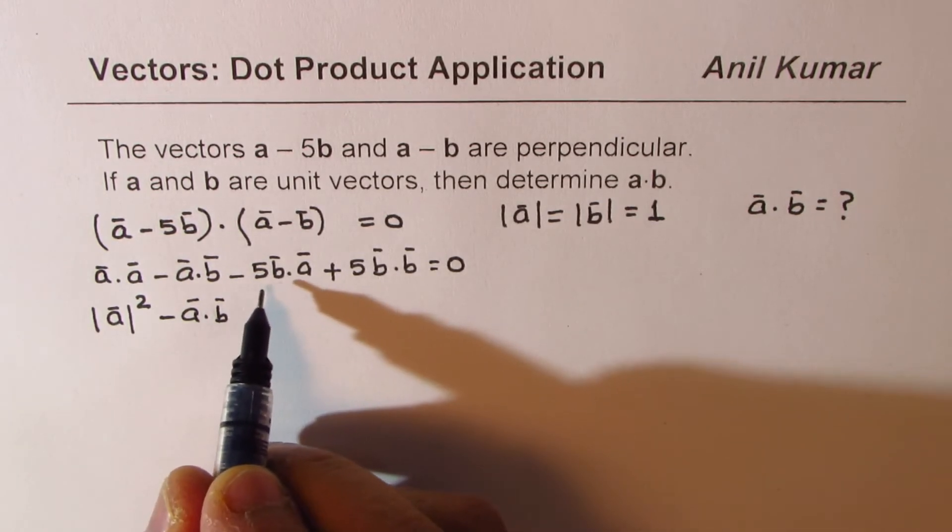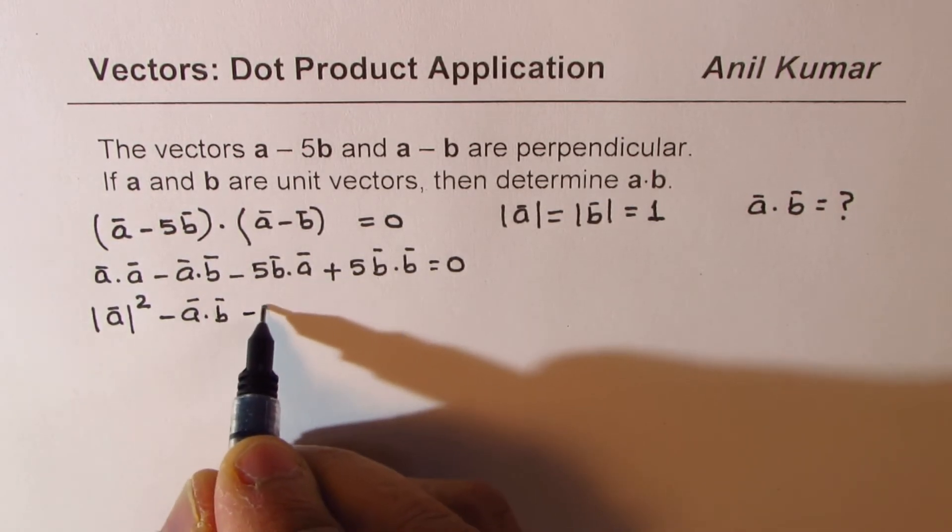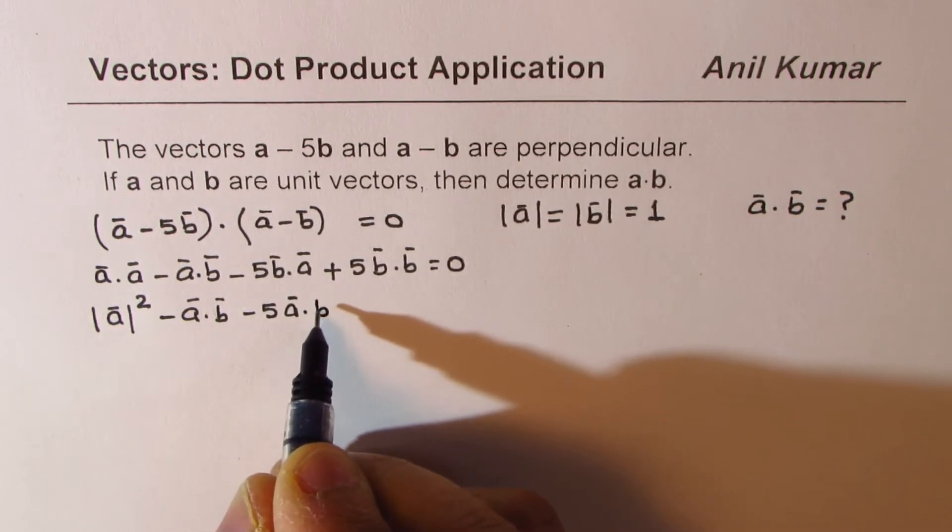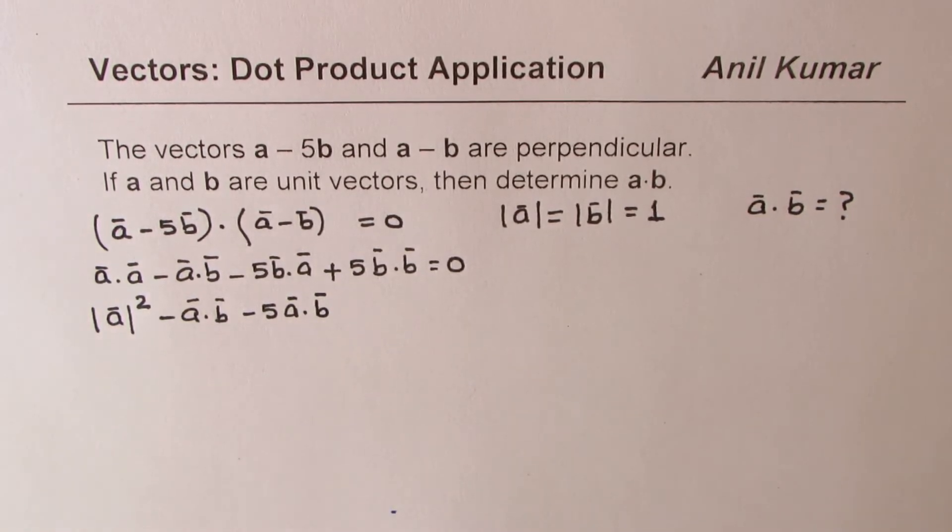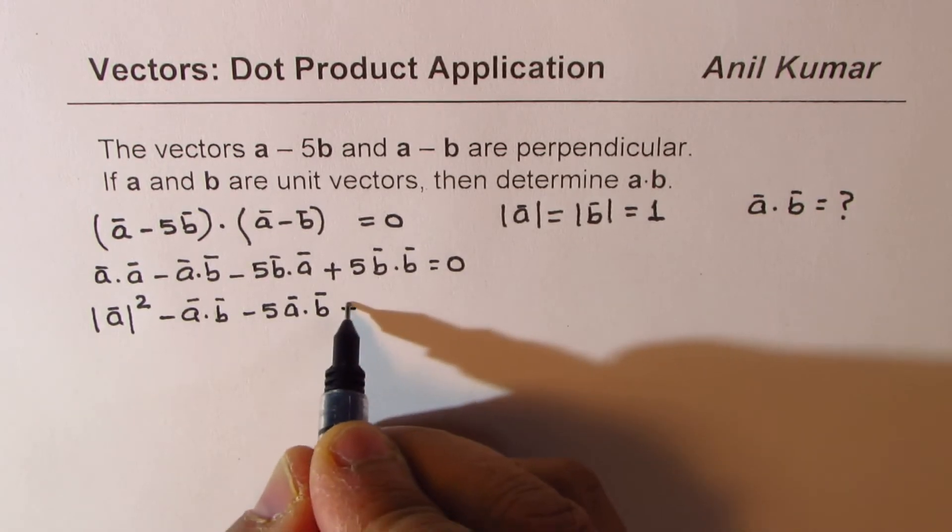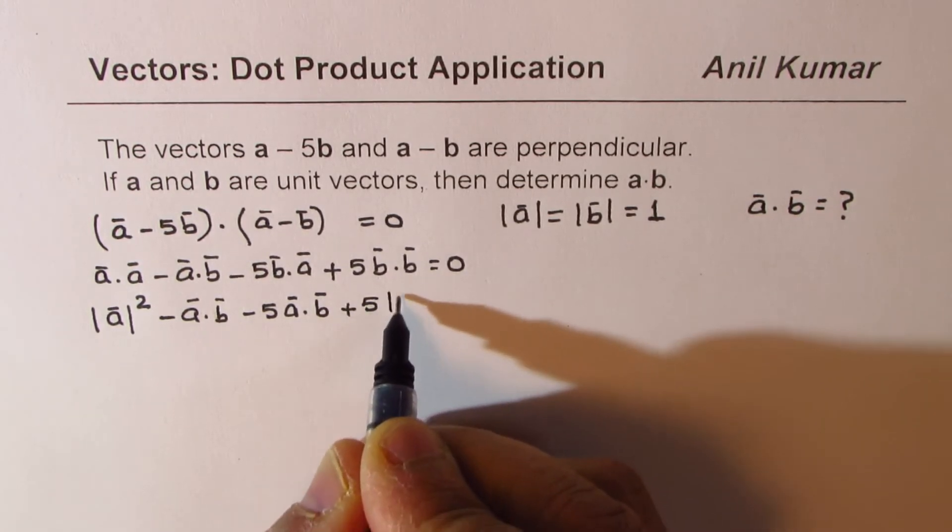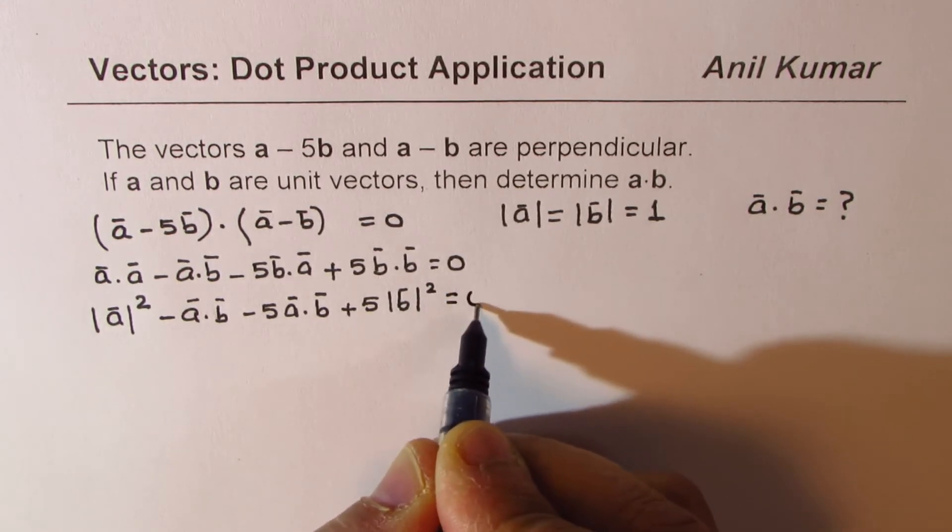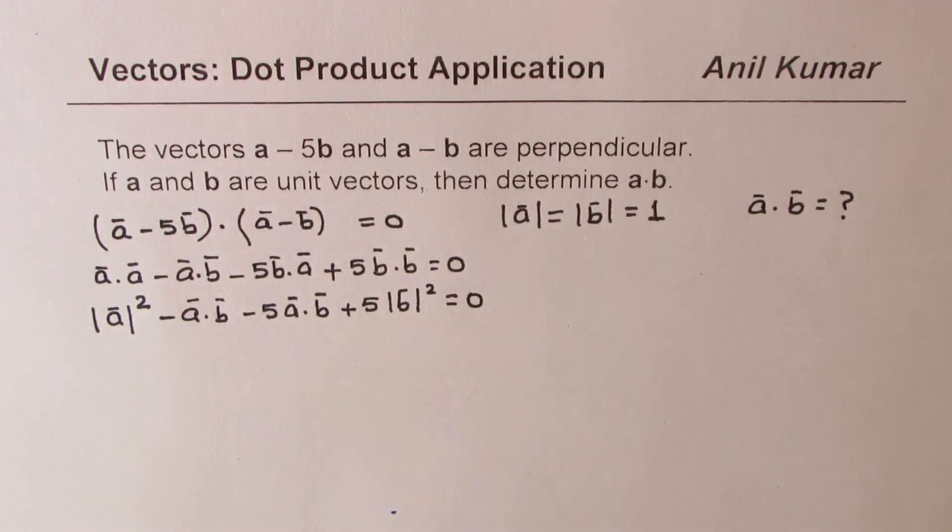Minus 5B dot A, so we can apply the commutative property and write this as minus 5A dot B. Plus 5B dot B means magnitude of B squared, and that should be equal to 0. So I hope this step is absolutely clear.